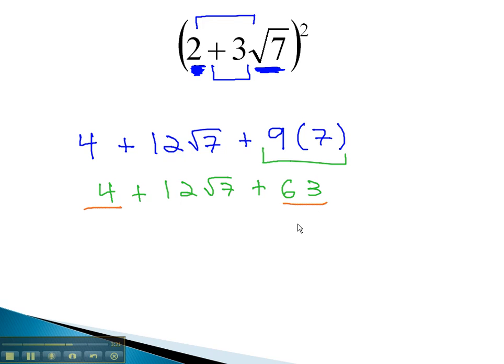Combining like terms, we get our final answer, 67 plus 12 root 7. By remembering our square shortcut, we can square the first term, take the product twice, and then square the last term. Always make sure your final answer is reduced, and you'll have your final answer.